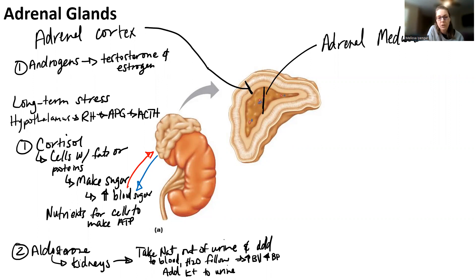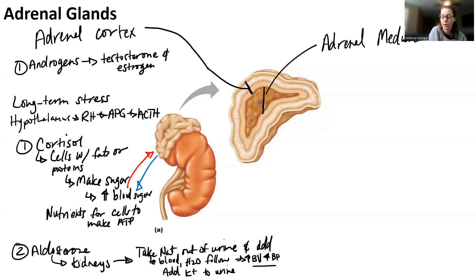That's what happens over periods of long-term stress. Think about blood pressure in periods of stress — it's going to be high. You need blood flowing and circulating to all your body cells, supplying nutrients and oxygen so they can continue to work. The second area is the adrenal medulla, which secretes two hormones used during times of short-term stress.